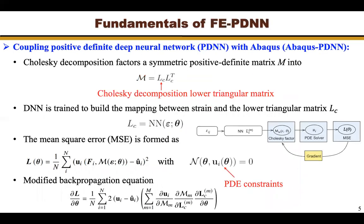To solve the convergence robustness issue of severely damaged material, Abaqus is coupled with a positive definite deep neural network to form Abaqus-PDNN. To achieve that, we utilized the Cholesky decomposition. The DNN is trained to build a mapping between the strain and the Cholesky decomposed lower triangular matrix. Then the reformed stiffness matrix can be guaranteed to be positive definite.